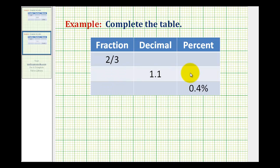We want to complete the following table that relates fractions, decimals, and percentages. So for this first row we want to convert the fraction two-thirds into a decimal and a percentage.